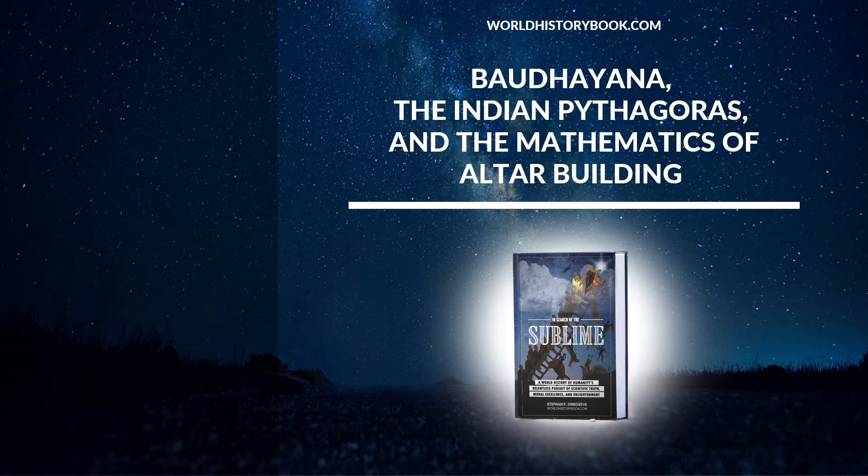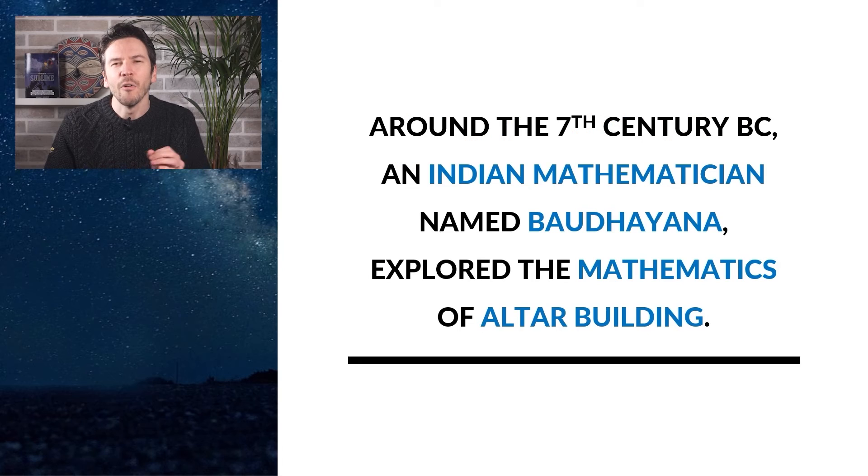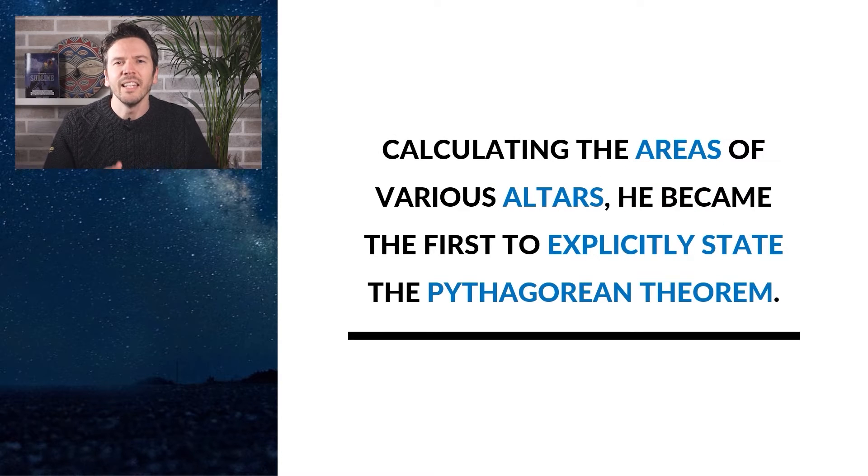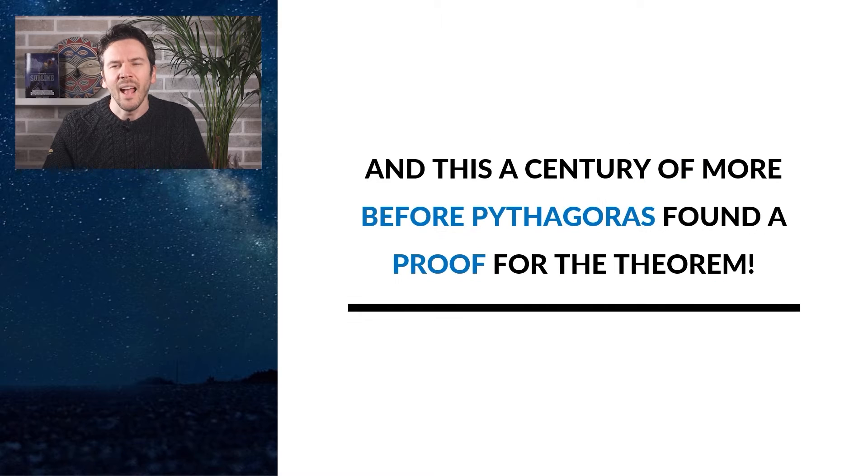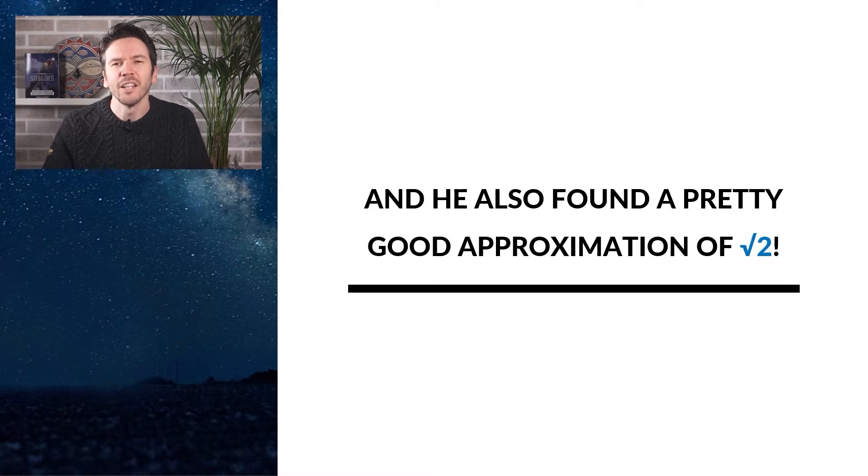Bodhayana, the Indian Pythagoras and the Mathematics of Altar Building. Around the 7th century BC, an Indian mathematician named Bodhayana explored the mathematics of altar building. Calculating the areas of various altars, he became the first to explicitly state the Pythagorean theorem, a century or more before Pythagoras found a proof. And on top of this, Bodhayana also found a pretty good approximation of the square root of 2.